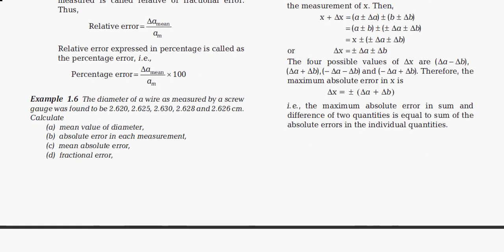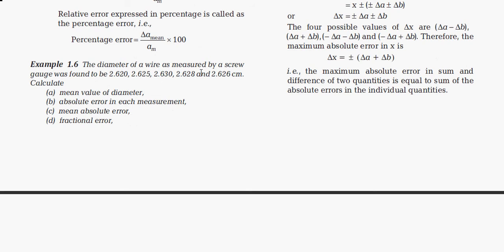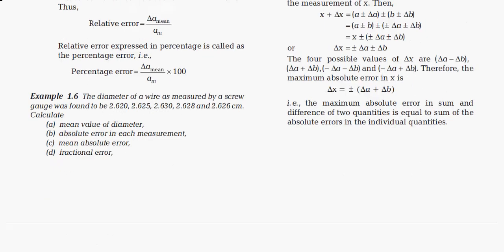Let's look at a problem to get a better idea. The diameter of a wire as measured by a screw gauge was found to be 2.620, 2.625, 2.630, 2.628, and 2.626 centimeters. Using these values, we need to find: the mean value of diameter, the absolute error, the mean absolute error, and the fractional error.